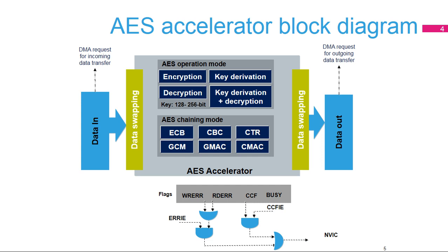Mode 3 is decryption using a given or pre-computed decryption key stored in the AES key registers. Mode 4 is key derivation plus decryption using an encryption key stored in the AES key registers, not used when the AES is configured in counter mode for performing a chaining algorithm.